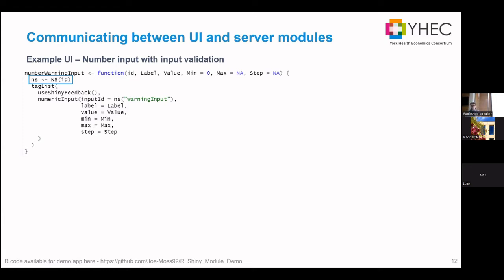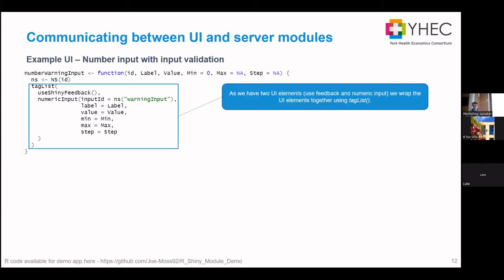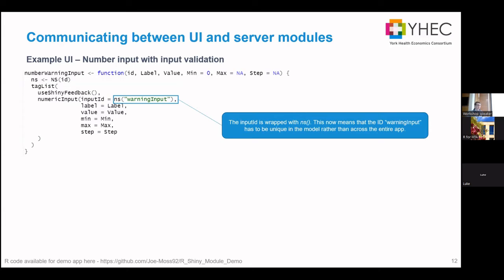As we can see here, the first line of the UI module is the namespace function, taking the module ID and associating all the input names to that particular module ID. Because I've got multiple UI elements, I wrap them together in the tagList function — I've seen on R blogs that this is needed for stability, and I can vouch for that. For the numeric input, rather than calling it warning_input directly, we pass that name to the namespace function, so I don't need to come up with new names every time I repeat the module.